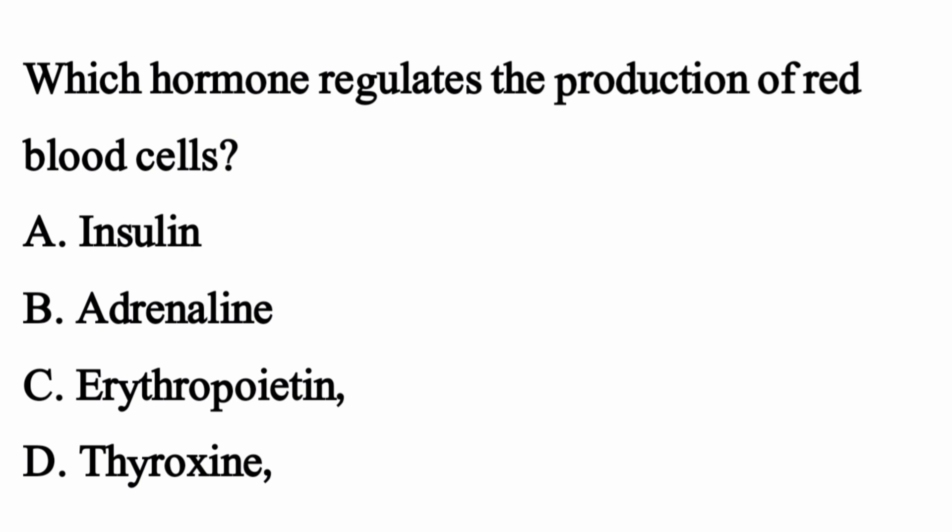Which hormone regulates the production of red blood cells? The right option is option C: erythropoietin.